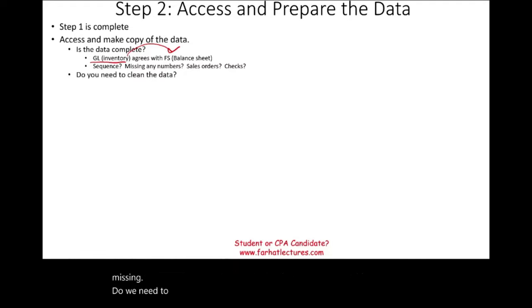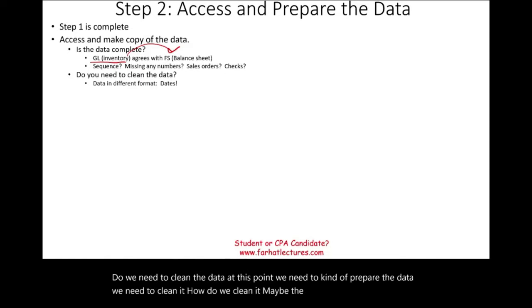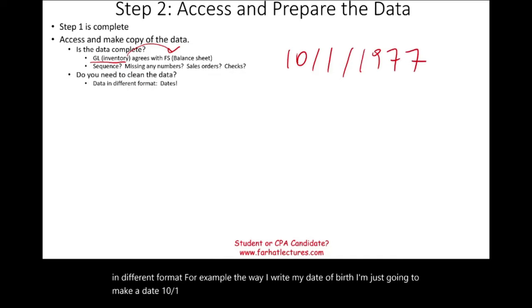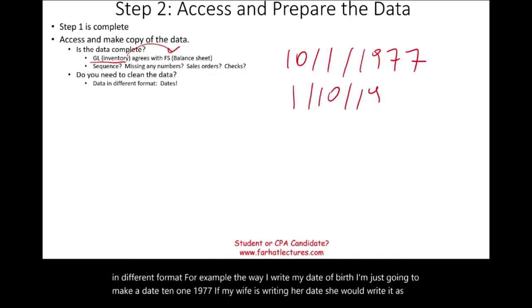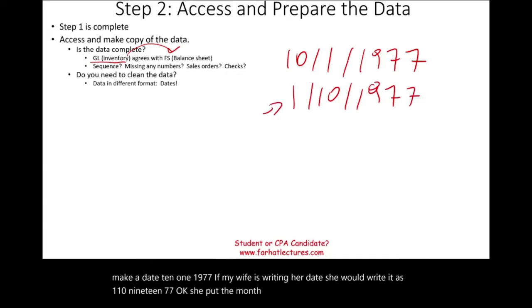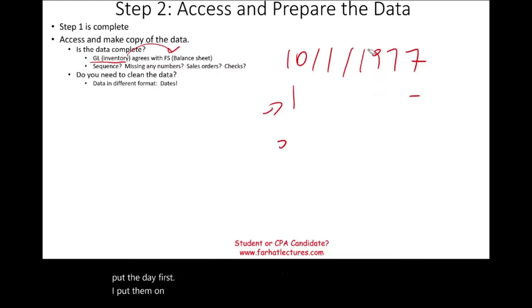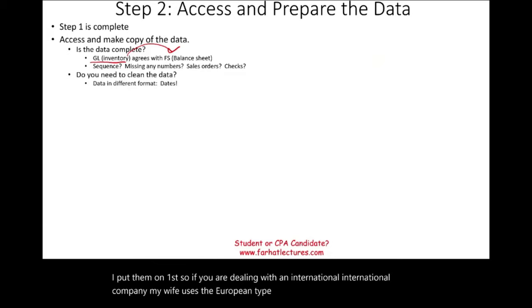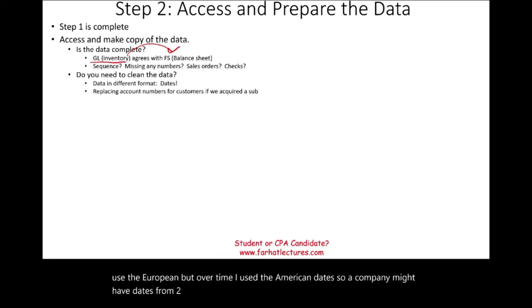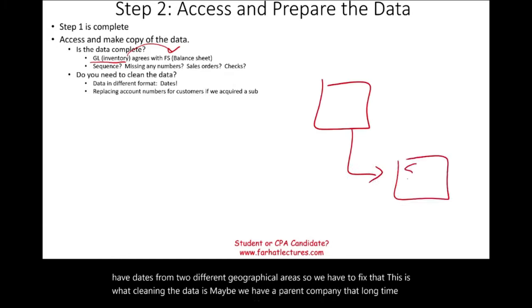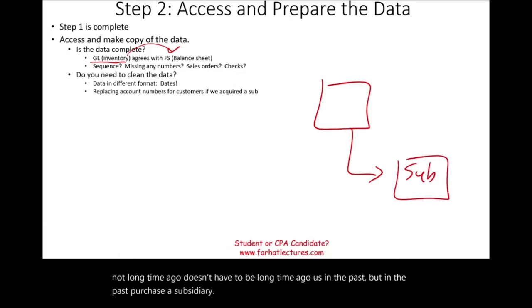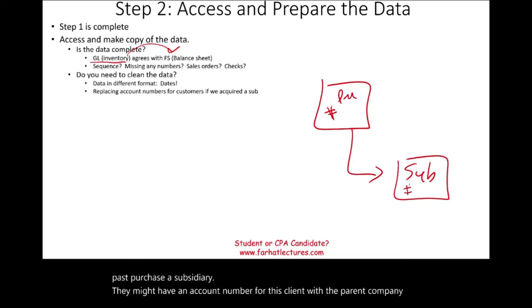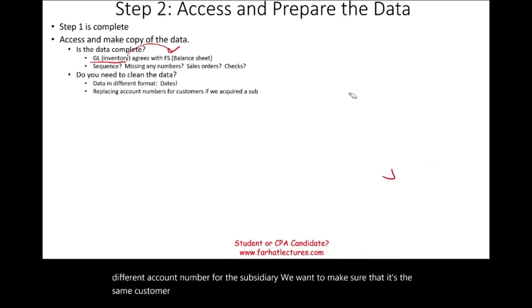We also need to clean the data. Some data may be presented in different formats — for example, date formats differ between countries: 10-1-1977 versus 1-10-1977 (day first versus month first). A company dealing with international data must reconcile these differences. Similarly, a parent company that acquired a subsidiary may have different account numbers for the same customer; we need to ensure consistency. We filter and format the data and consider data security and integrity.